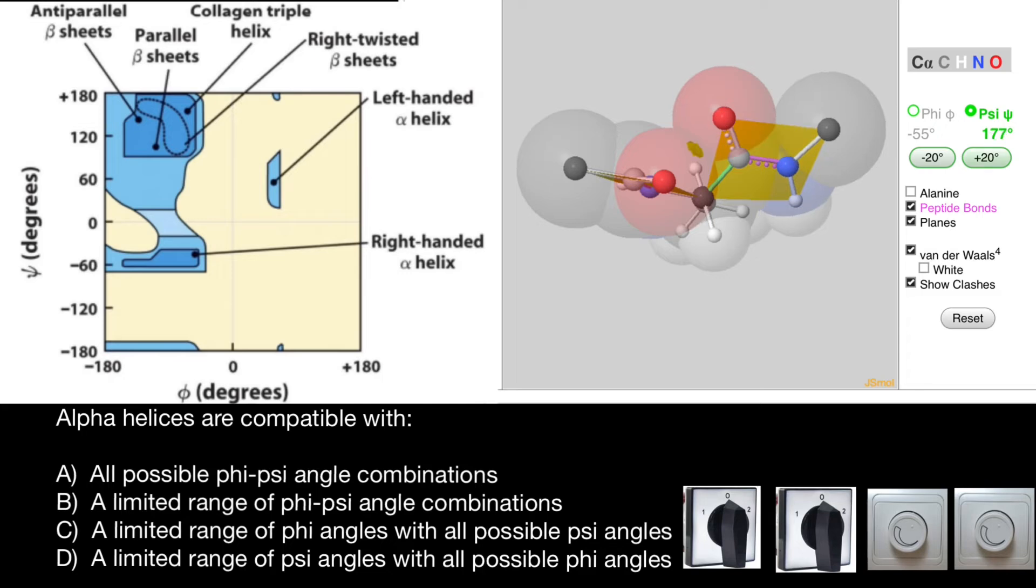This is also true for psi angle. Take a look. Now I'm rotating another angle and it also has clashes as you see. When it doesn't have clashes, that means it is an energetically favorable position. And there are not so many positions that this angle can take.